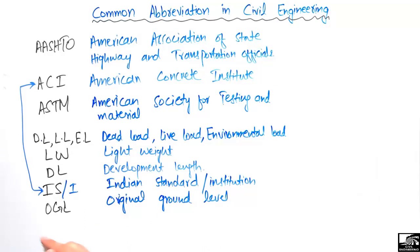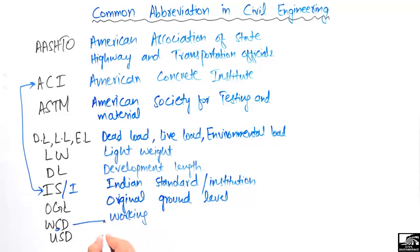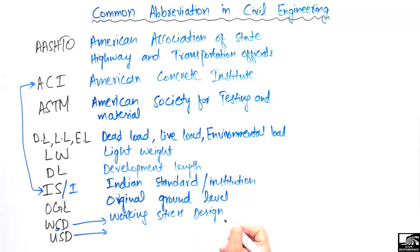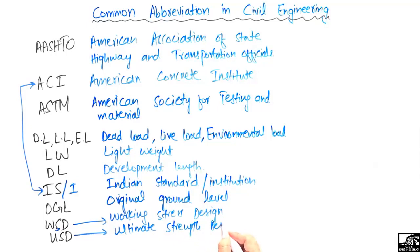The next two are WSD and USD — two different design methods for structural members. WSD is the Working Stress Design method, where we use a factor of safety of around 2 on material strength. USD is the Ultimate Strength Design method, where we reduce the material strength and also increase the applied load on the structure. These two methods are widely used for the design of structural members.